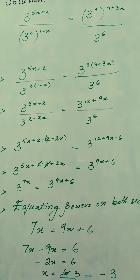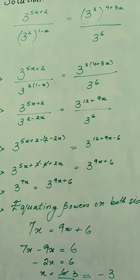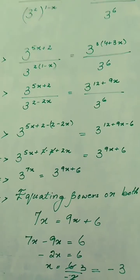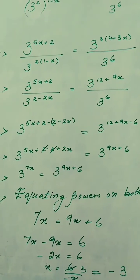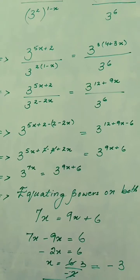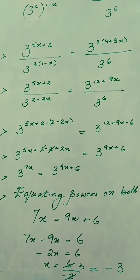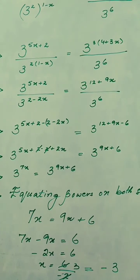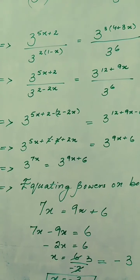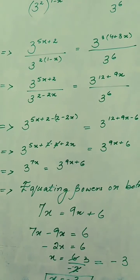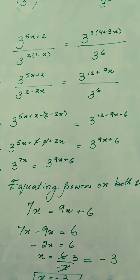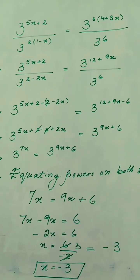As we know, when the base is the same, the expression in the denominator can move to the numerator and subtract from the power already in the numerator. Our equation becomes 3 to the power (5x+2−2+2x) equals 3 to the power (12+9x−6). Since minus multiplied by minus equals plus, we get 3 to the power (7x) equals 3 to the power (9x+6).